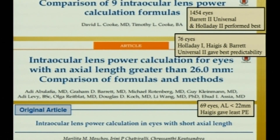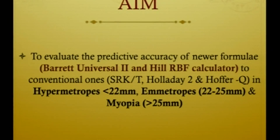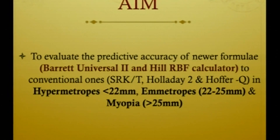There is no single formula in the literature which works best for all axial lengths. Specific formulas have been assigned to particular axial lengths. Our aim was to evaluate the predictive accuracy of the newer formulas — Barrett Universal II and Hill RBF — compared to the conventional ones: SRKT, Holaday II, and Hoffer Q, in hypermetropes, emetropes, and myopes.